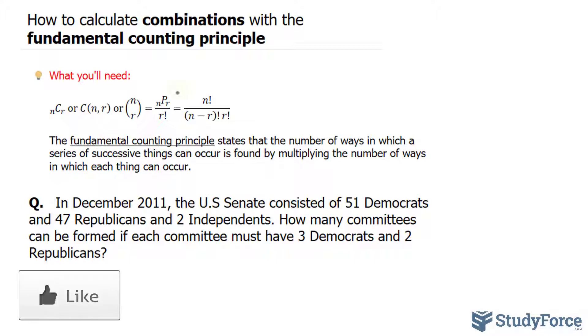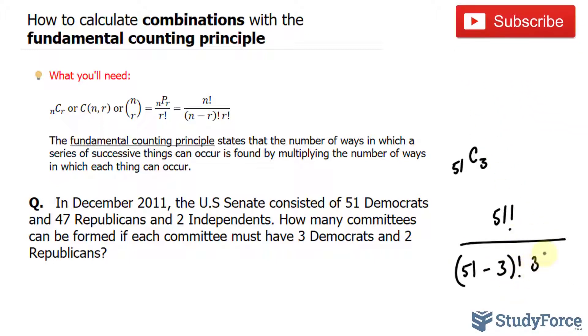Therefore using the formula that we have here, there are 51 Democrats and we want to pick 3 from those, so we'll write down 51 choose 3. We'll set up our formula: we have 51 as n, 51 factorial over 51 minus the amount that we select, which is 3, factorial times 3 factorial.